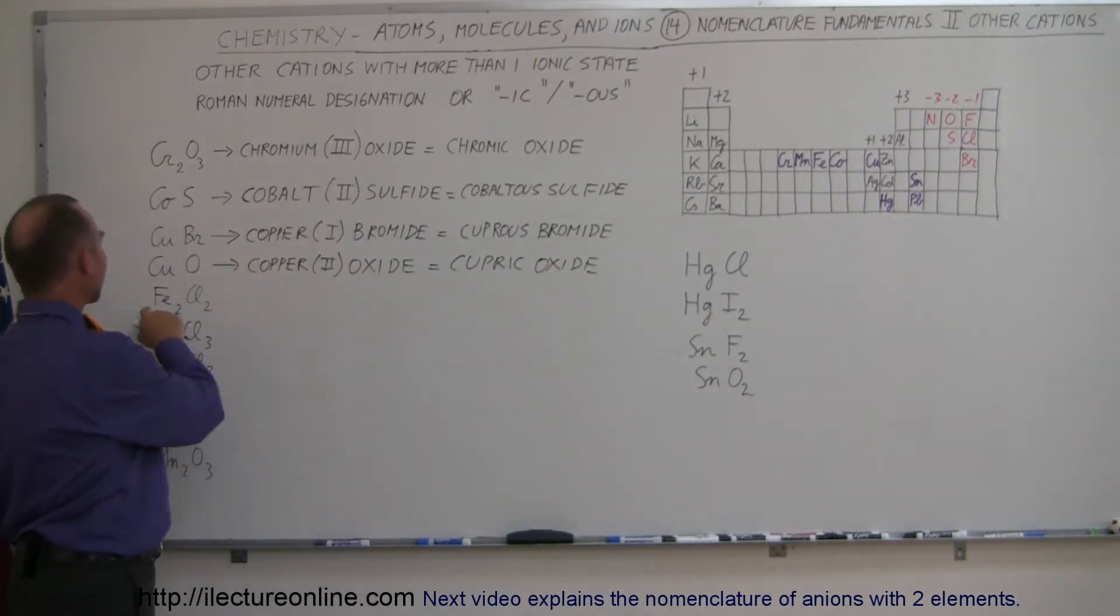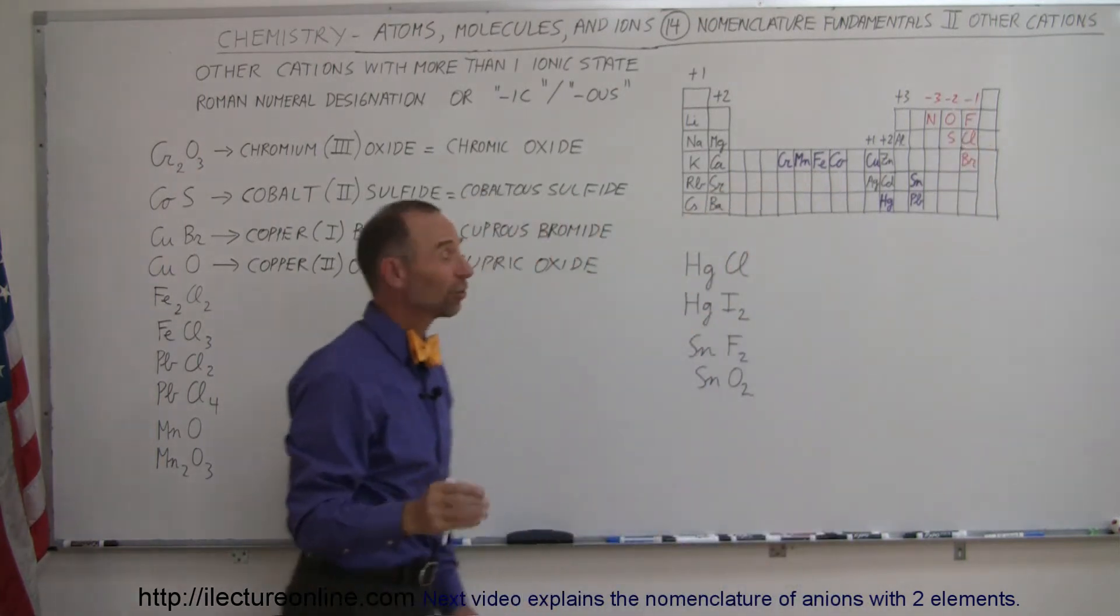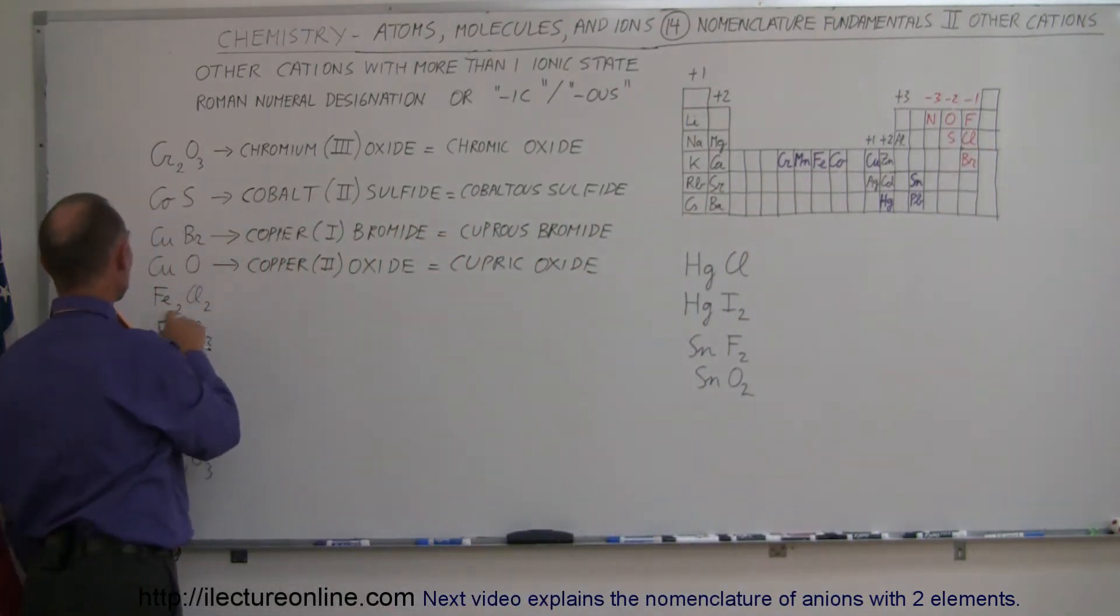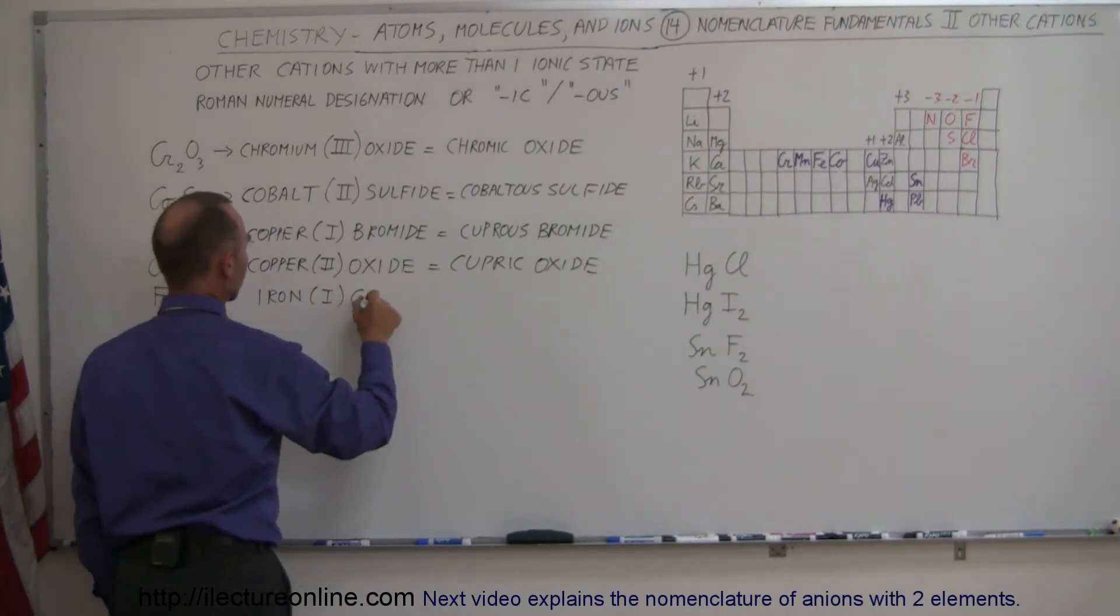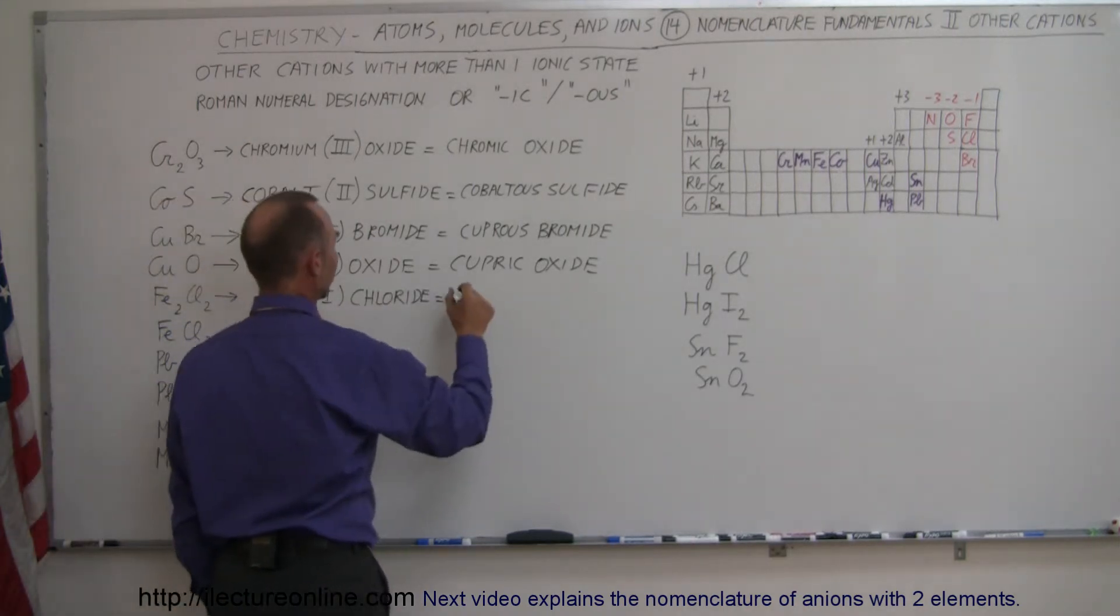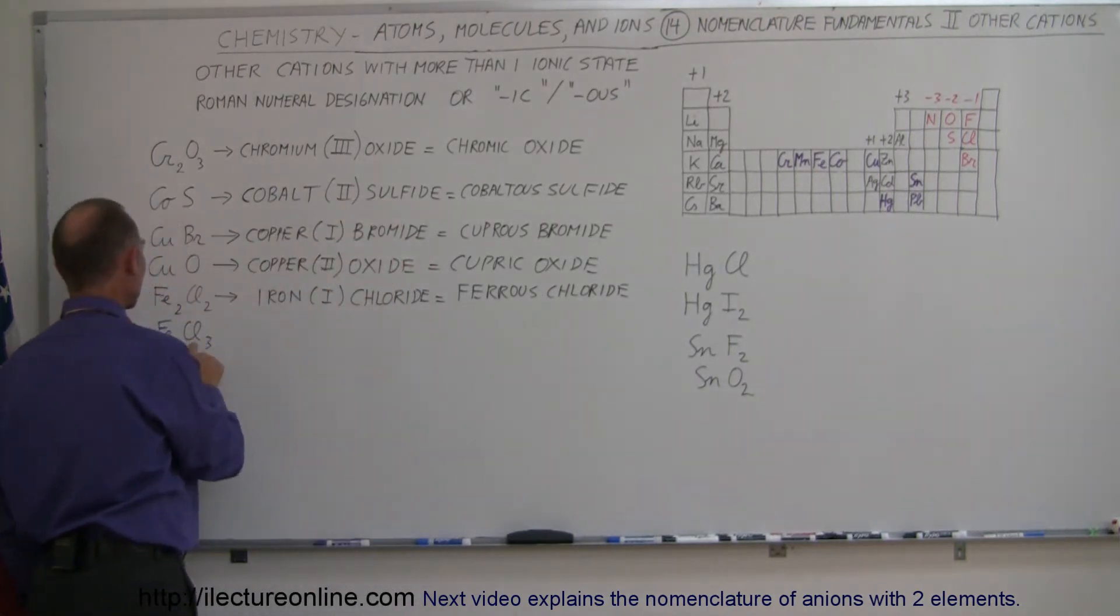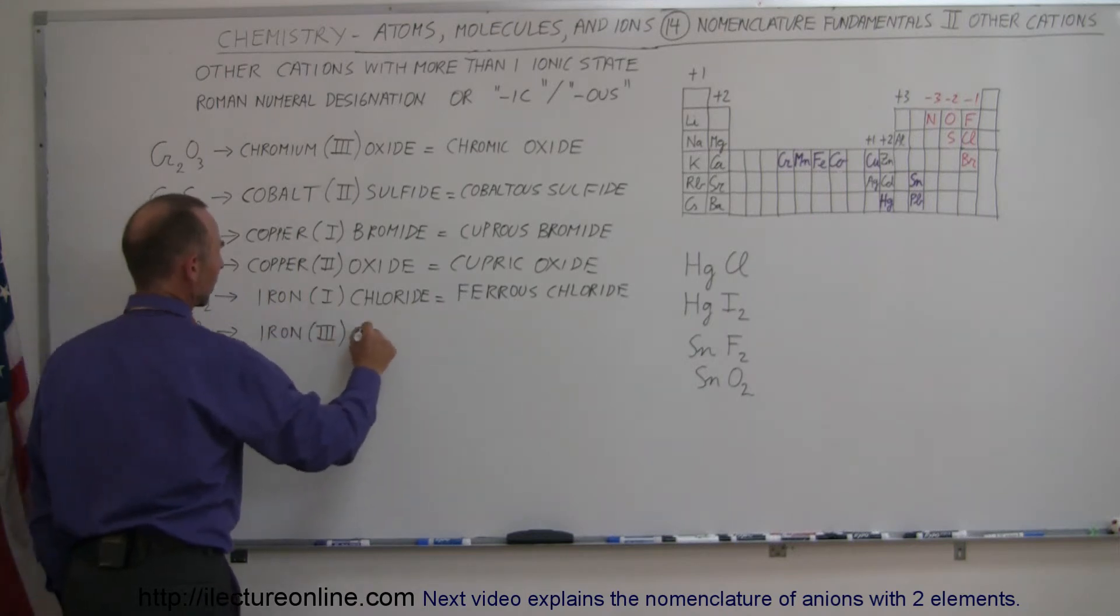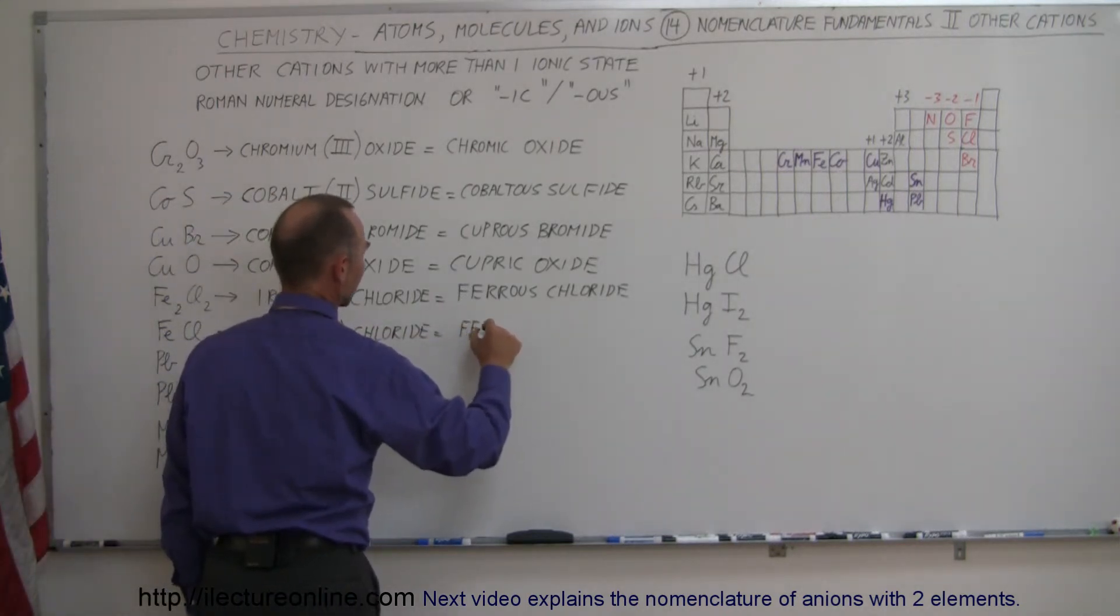Now we have iron and chlorine. Chlorine has a minus one state, we have two of those, that's a total of minus two. We have one iron at plus two, so this becomes iron two chloride, which is equal to ferrous chloride. And here we have iron mixed with three chlorines, so we call that iron three chloride or ferric chloride.